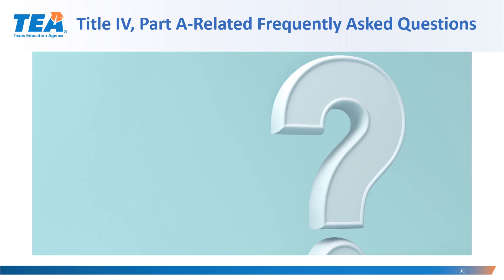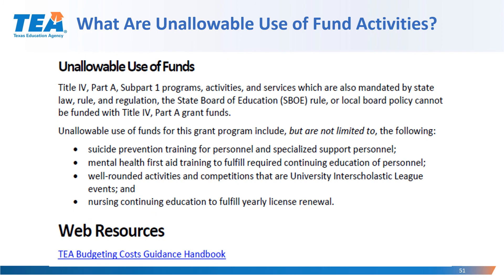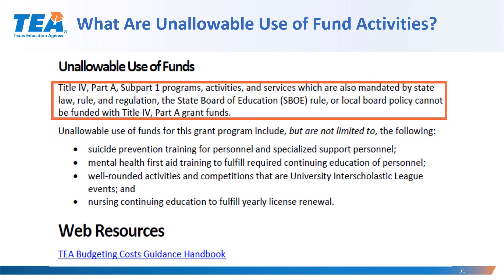Now I will stop and address just a few of the Title IV frequently asked questions. Districts know some of the things that are allowable, but what is an unallowable use of Title IV Part A funds? Those activities that are mandated by state law, rule and regulation, a state board of education rule, or local board policy cannot be funded with Title IV Part A grant funds. And you see a list of just a few of the state required activities that would not be able to be supported with Title IV funds.